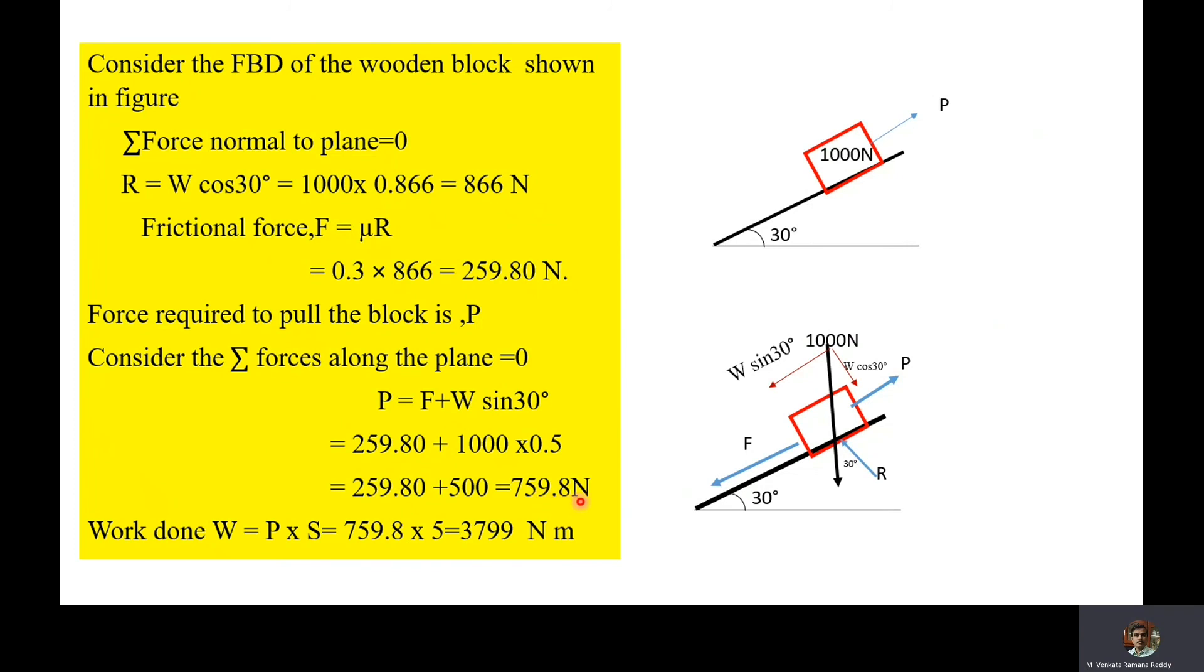Which is equal to 759.8 newtons. Then work done is equal to force into distance. Force value is 759.8 newtons and distance is 5 meters. Therefore, work done W is equal to P × s, which is equal to 759.8 × 5, which is equal to 3799 newton meters.